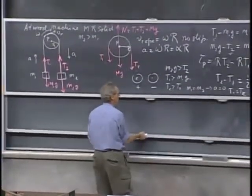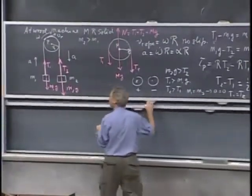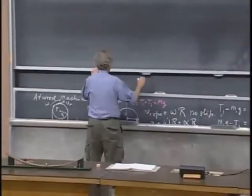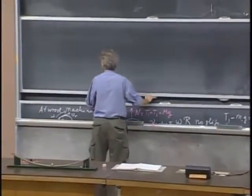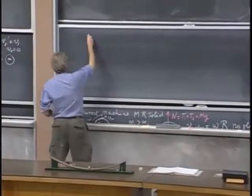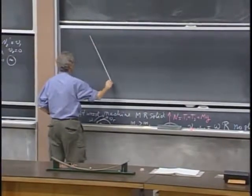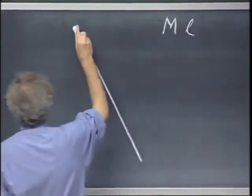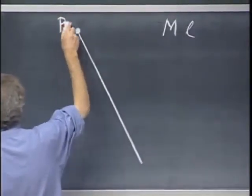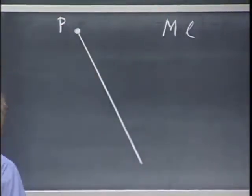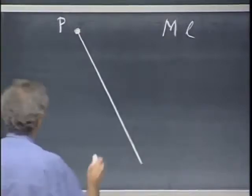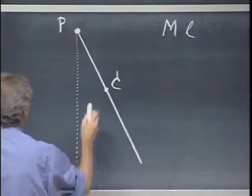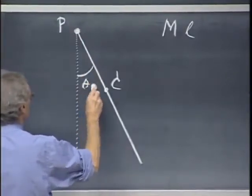All right, let's now do another problem: simple harmonic oscillation of a physical pendulum. I have here a rod, mass m, length L, rotating about an axis perpendicular to the blackboard without friction. Here is the center of the rod, and let this angle be theta.